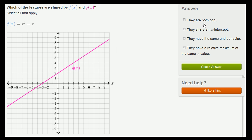So what are our options? The first one is that they are both odd. Just by looking at g(x), you can tell that it is not odd. The biggest giveaway is that an odd function would go through the origin. g(0) would have to equal 0. If you want to go straight to the definition of an odd function, g(x) would have to equal the negative of g(-x).